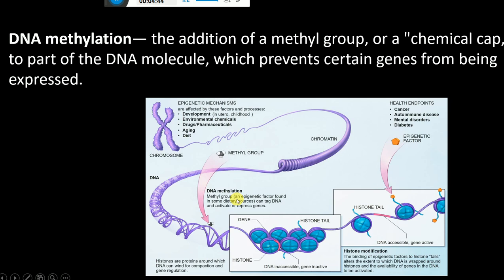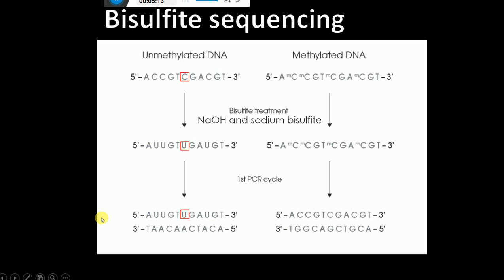To detect DNA methylation, one of the most commonly used methods is bisulfite sequencing. In this method, we treat the DNA sample — whether unmethylated or methylated — with sodium hydroxide and sodium bisulfite, which is why it is called bisulfite treatment.